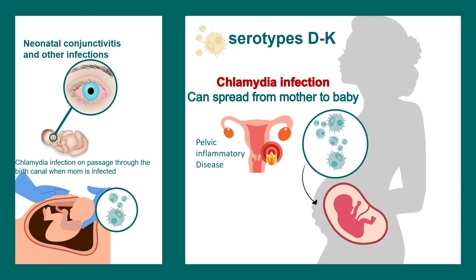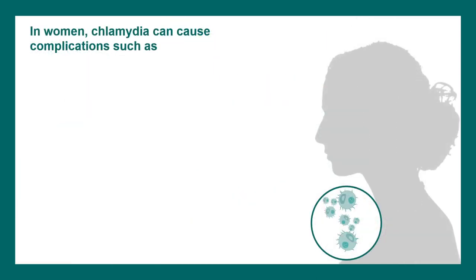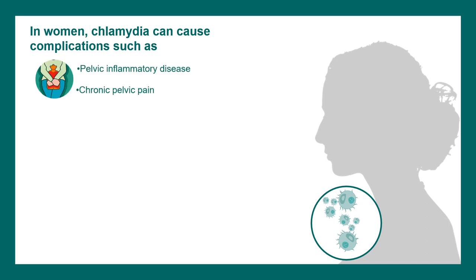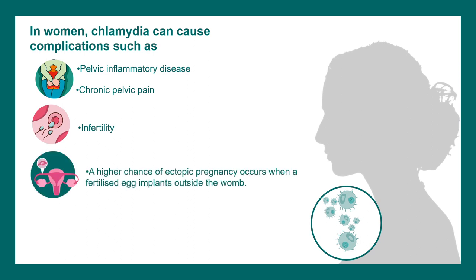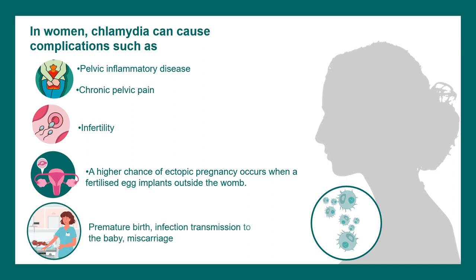Serotypes D and K can lead to pelvic inflammatory disease and non-gonococcal urethritis. In women, Chlamydia can cause pelvic inflammatory disease, chronic pelvic pain, infertility, increased chances of ectopic pregnancy, and may also lead to premature birth or miscarriage.